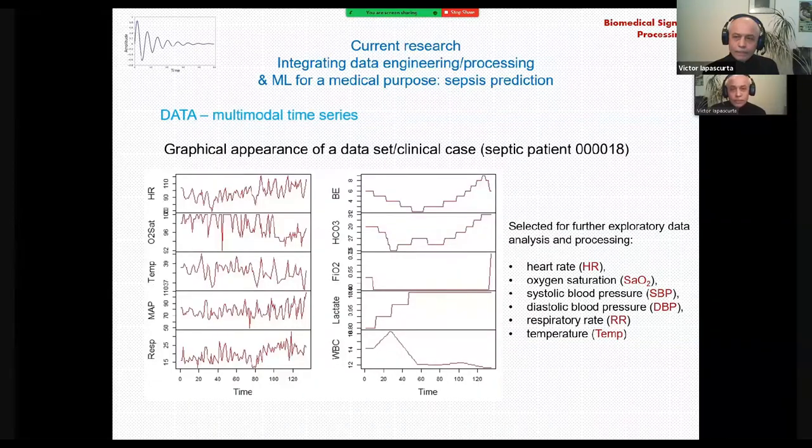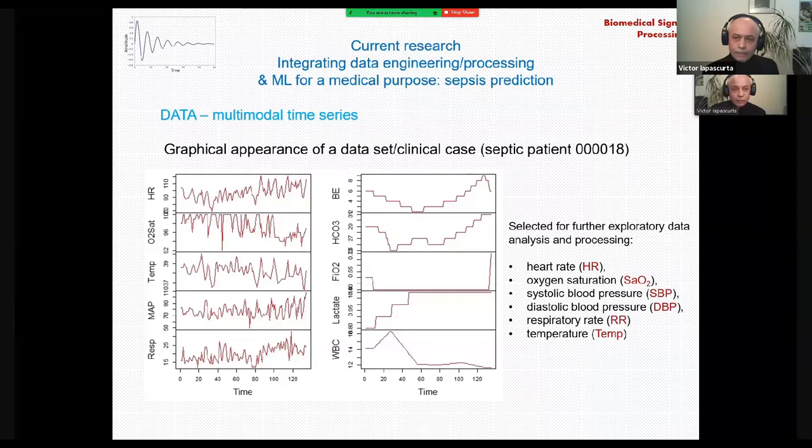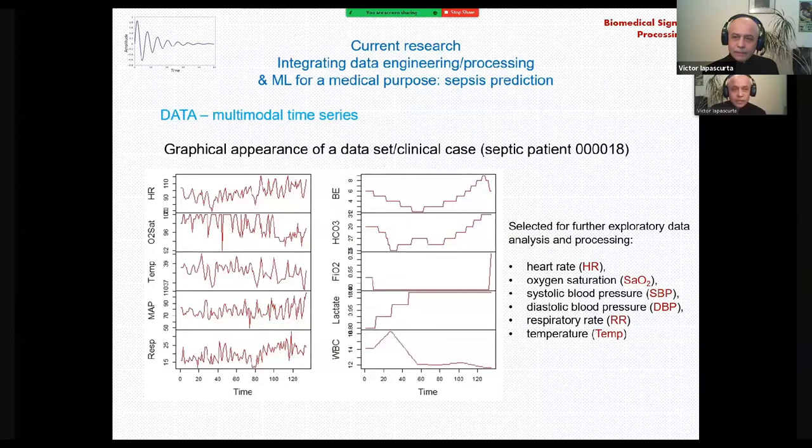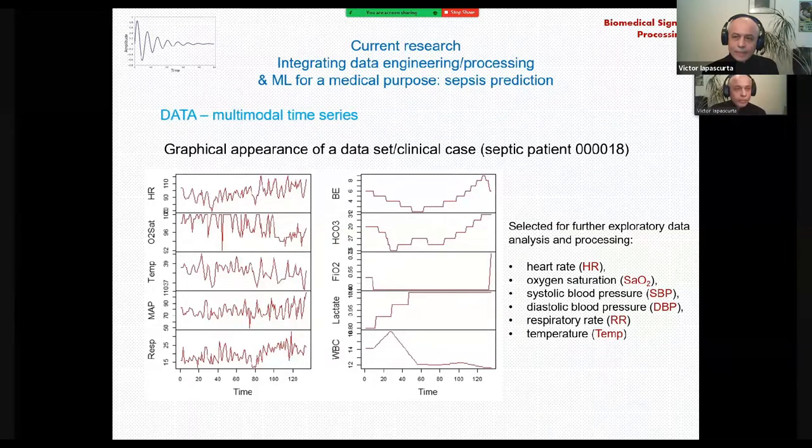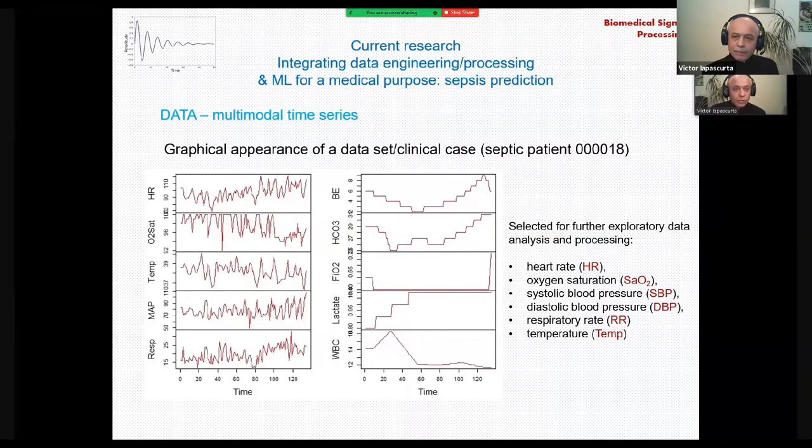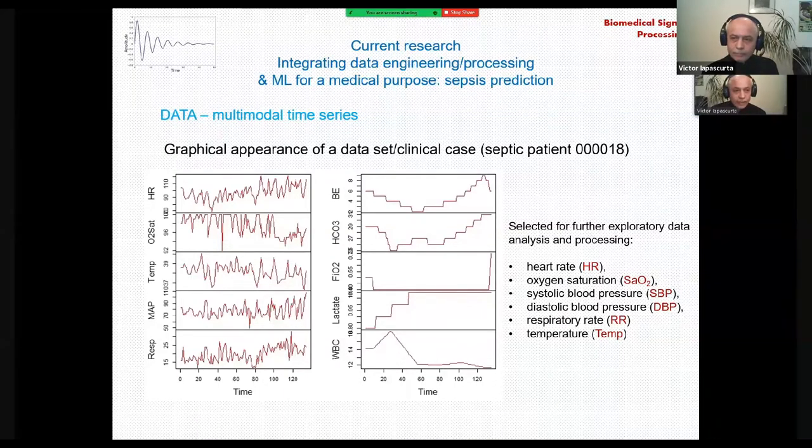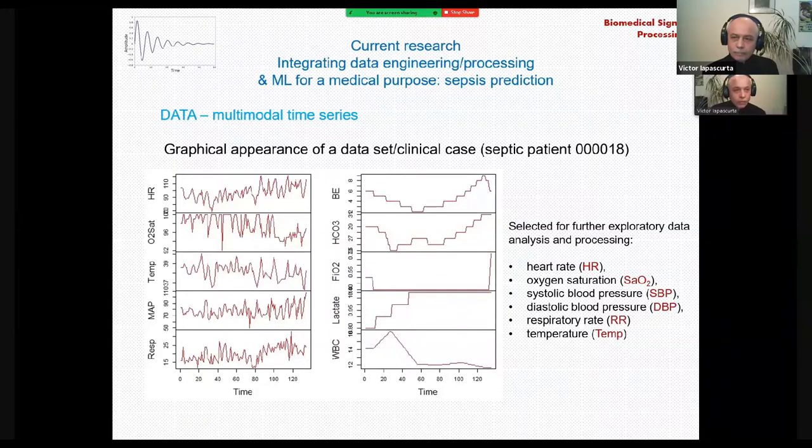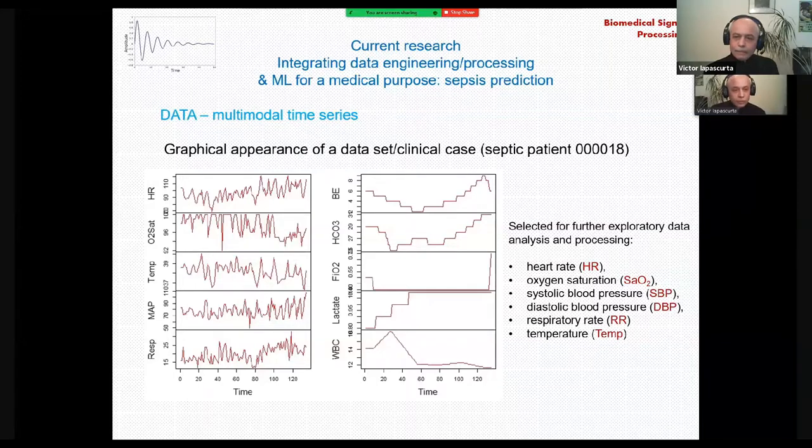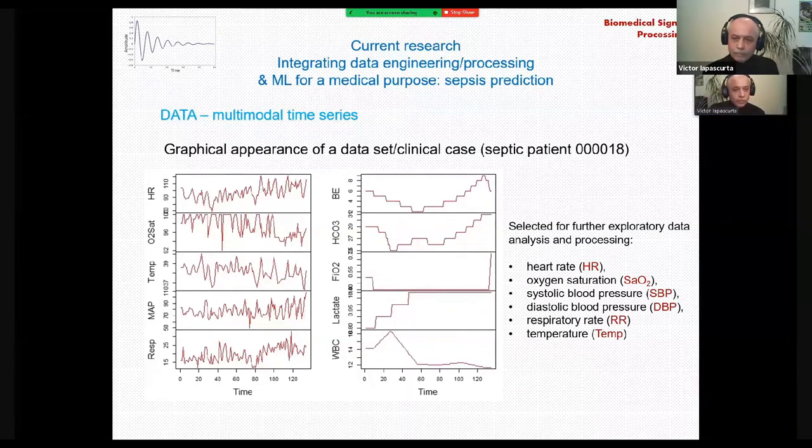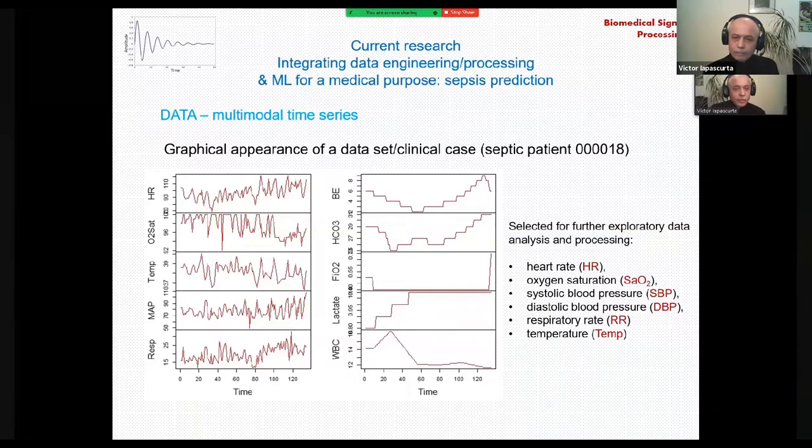Here we can see the appearance of this data, but what really counts is selecting the data with the highest discriminatory properties in order to build subsequently the machine learning system. Experimenting with different sets of data, different parameters, we came to a final set of parameters that are presented on the screen, including heart rate, oxygen saturation, systolic blood pressure, diastolic pressure, respiratory rate and temperature.